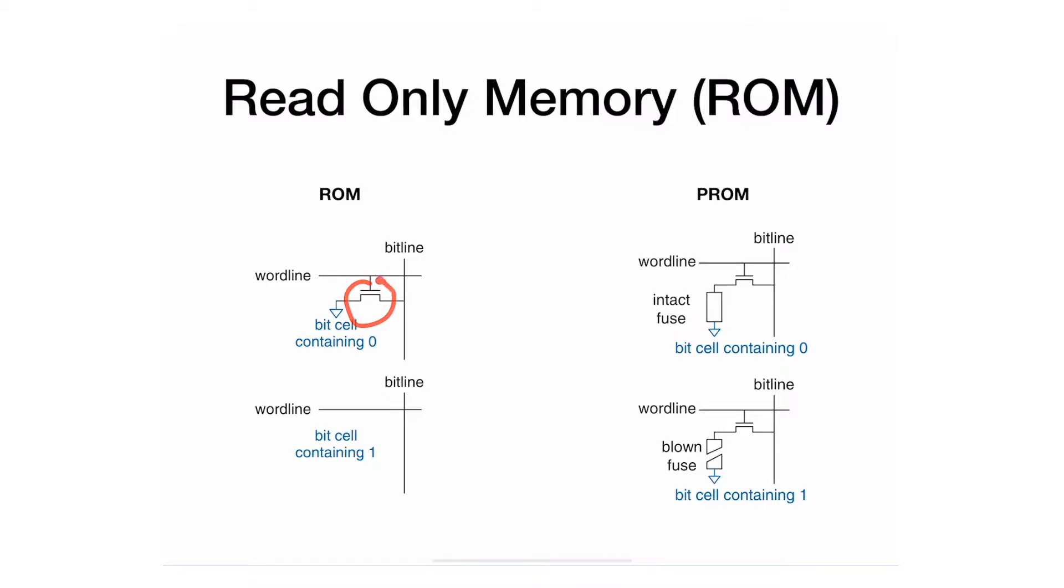If you have a transistor, you have a 0. If you don't have a transistor, the cell contains a 1. The way you specify whether you have a transistor or not is by the manufacturer. So you write your code, send it to the manufacturer, and the manufacturer would manufacture a chip that either has a transistor or doesn't have a transistor.